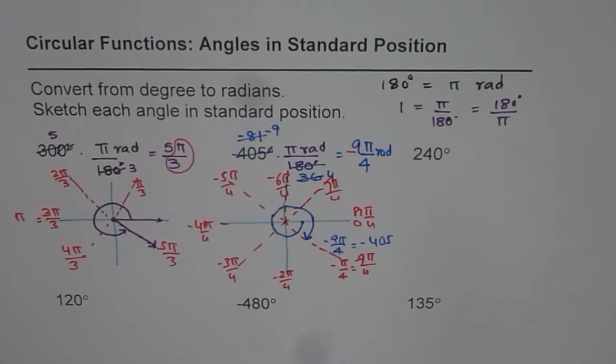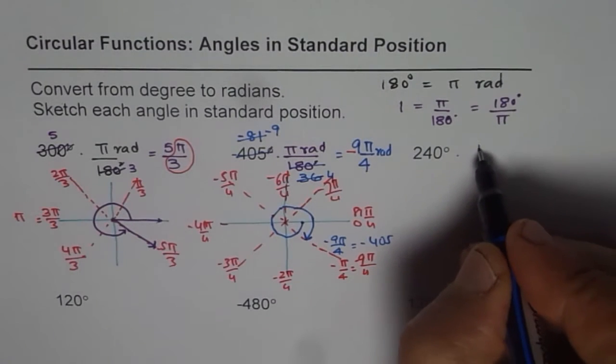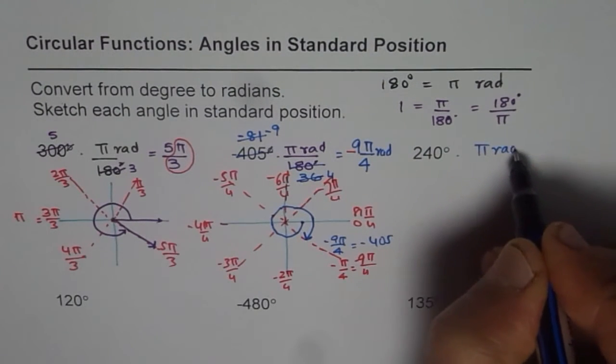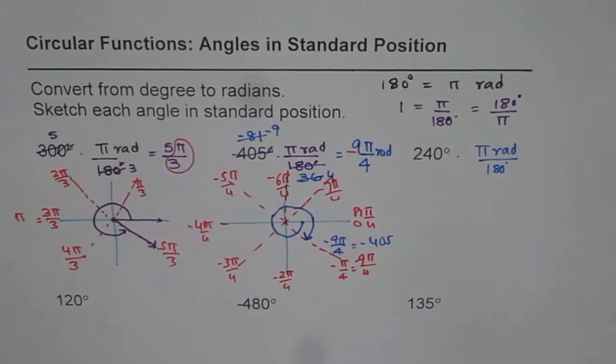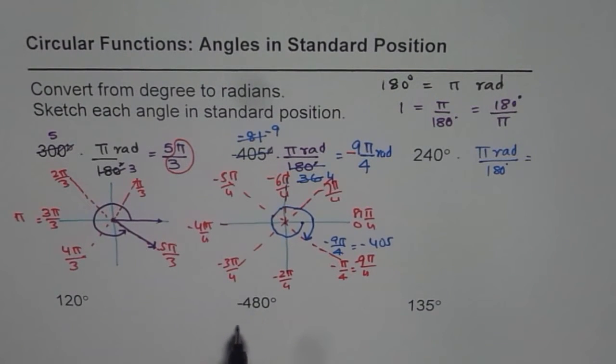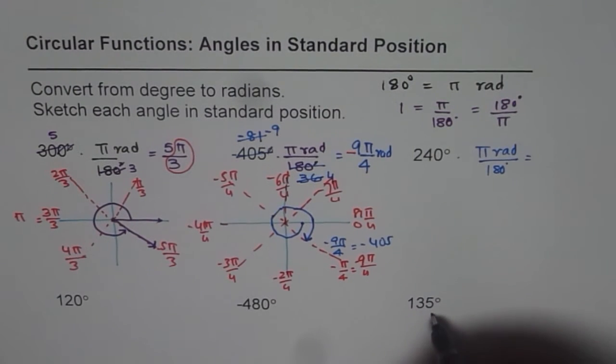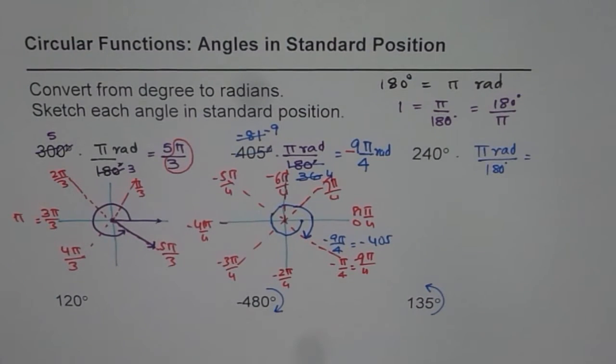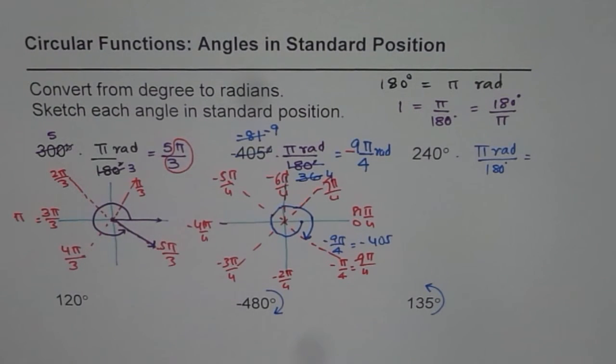So that is how you sketch the angles in standard position after converting them to radians. I would like you to do the rest of the questions. That is 240 degrees. Convert that to radians. To convert, you will multiply by pi radians and divide by 180 degrees. That is what you have to do for each. And then whatever you get, simplify it to write it in radians. And then sketch as we did here. Remember, negative means the direction is clockwise, positive means counterclockwise. So this is counterclockwise and that is clockwise. That is how you have to convert and sketch your angles. I hope it is clear. Thank you and all the best.